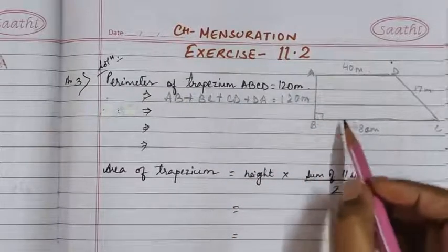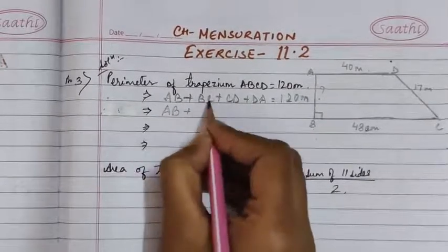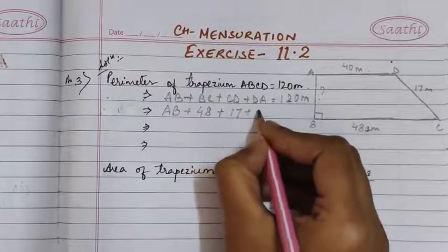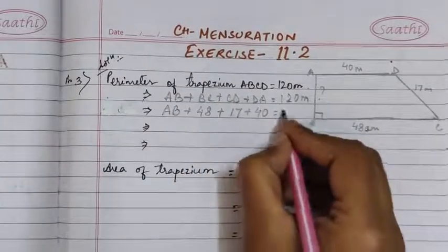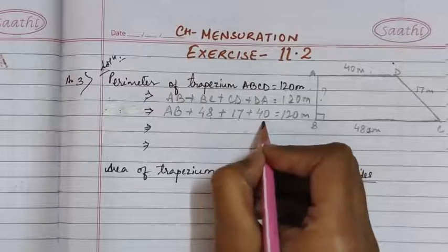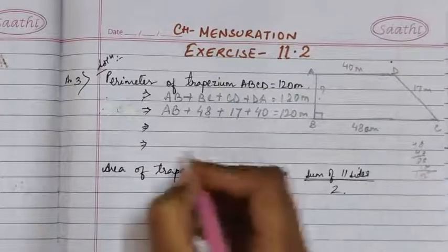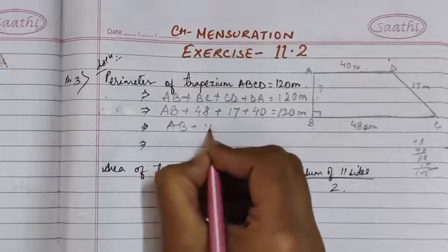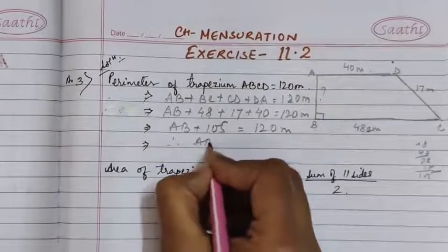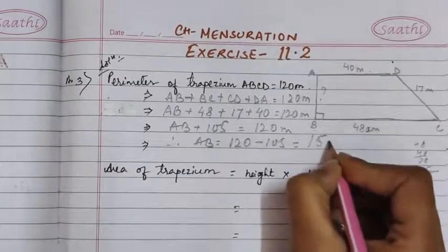In this figure we don't know the length of side AB, so we will leave it as it is. BC is given as 48 m, CD is given as 17 m, and DA is given as 40 m. When we add 48, 17, and 40 we get 105. So AB + 105 = 120 m, therefore AB = 120 − 105 = 15 m.